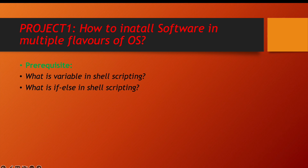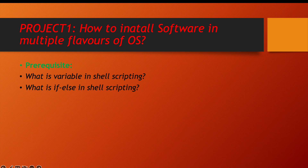Hello everyone, I hope you all are doing great. Let us start with our first project in shell scripting. Today's project is how to install software in multiple flavors of operating system. Suppose I have Linux, Mac OS, and Windows — for each I would have to write a separate script. But what we want is a single script that checks the operating system type and accordingly proceeds with software installation.